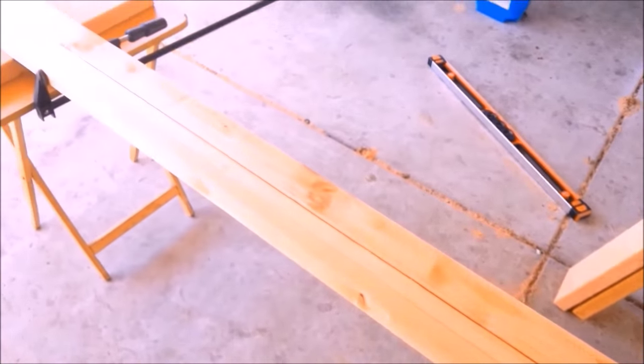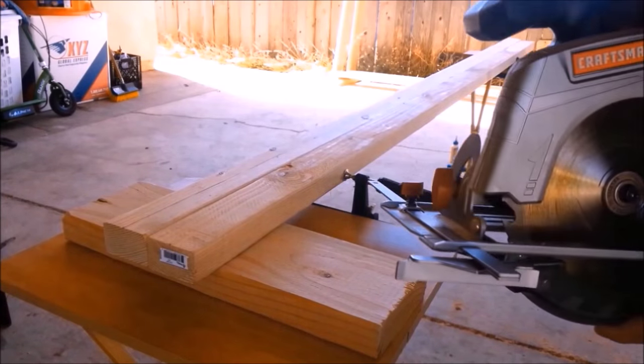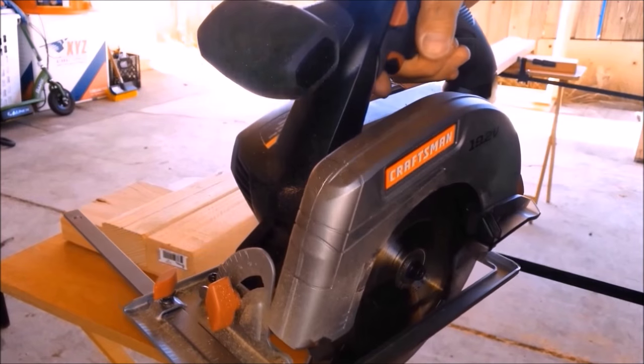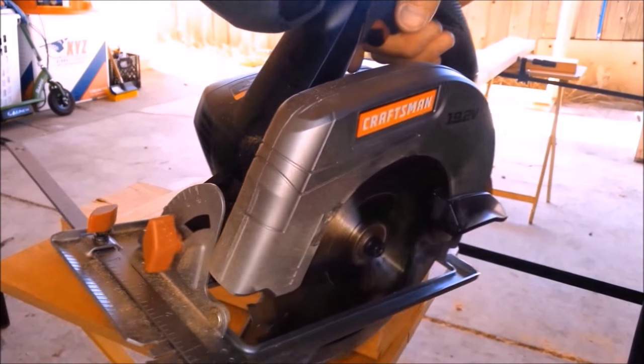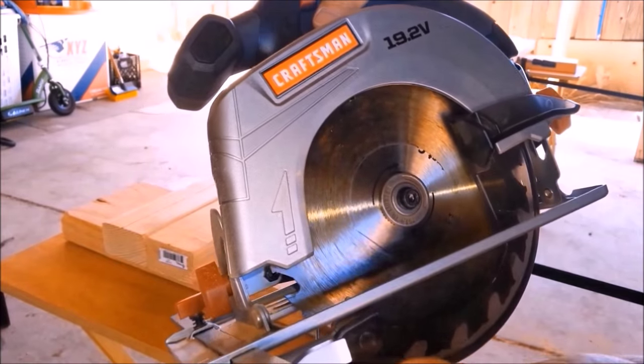What I'm going to make is the slat rails. Since I don't have a table saw, I'm going to be using my circular saw, but I'm going to use this little guide.